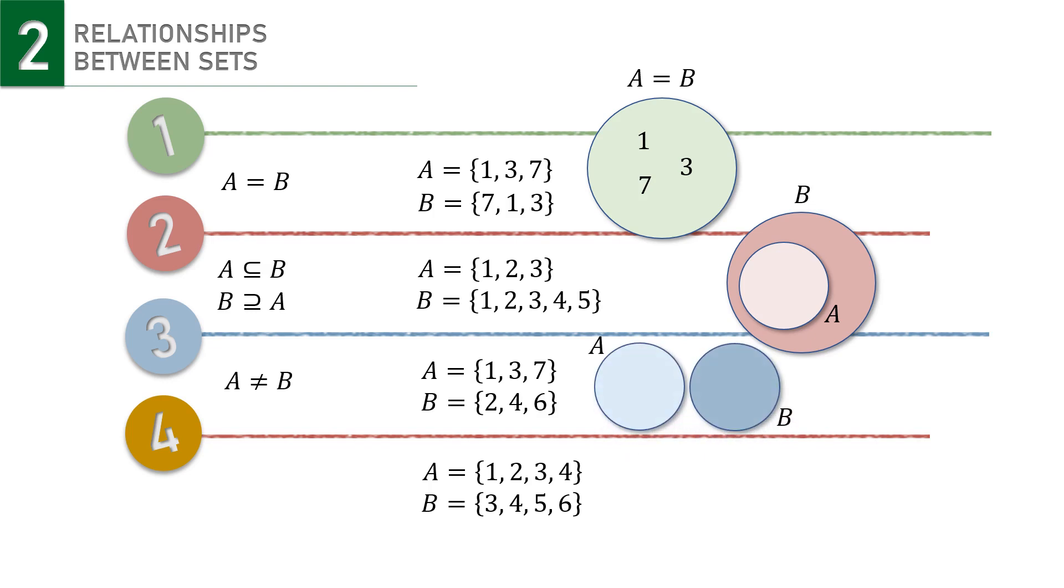The last situation may bring us to one of the operations in set concept. Since the two sets have 3 and 4 as elements in common, so we have intersection between two sets as visualized here. The intersection is formalized like this, with the reverse U symbol, and 3 and 4 are elements of A intersection B.